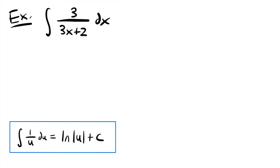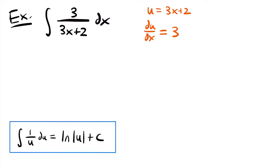When you have a rational function, look for some quantity in the denominator to the power of 1. This quantity in the denominator is to the power of 1, so if we set this equal to u, we would have a 1 divided by u function where this rule would apply. We'll let u equal 3x plus 2. Taking the derivative, du/dx equals 3, since the derivative of 3x is just 3 and the derivative of 2 is 0. Solving for du, we get du equals 3 dx. Notice that we have a 3 dx in our integral that we can replace with du.